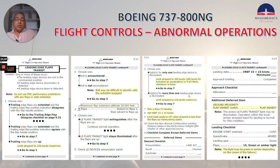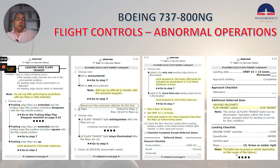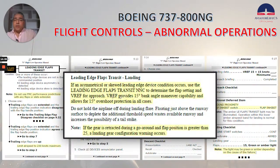If the light for more than one leading edge device is illuminated, limit airspeed to 230 knots maximum. Plan a flap 15 landing. Set V-Ref 15 plus 15 knots. Limit bank angle to 15 degrees when airspeed is less than flap sub maneuvering speed. Ground proximity flap inhibit switch goes to flap inhibit. In the landing checklist, flap 15 green or amber light — the light may be green or amber depending on the cause of the failure. FCTM says: if an asymmetrical or skewed leading edge device condition occurs, use the leading edge flaps transit non-normal checklist to determine the flap setting and VREF for approach. VREF provides 15 degrees bank angle maneuver capability and allows for 15 degrees overshoot protection in all cases. Note: if the gear is retracted during a go-around and flap position is greater than 25, a landing gear configuration warning occurs.